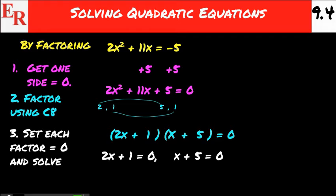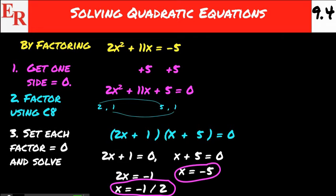So we set 2x plus 1 equal to 0, and x plus 5 equals 0. We solve those using our linear algebra, which we're good at. We subtract 1 and divide by 2, giving us one solution to the quadratic equation. For the other solution over here, we'll undo adding 5 by subtracting 5, and that'll give us our other solution of x equals negative 5.